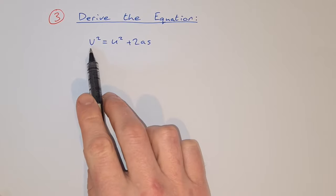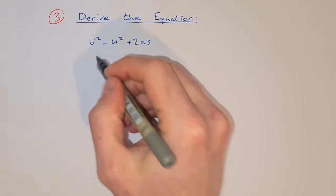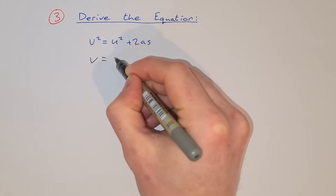So we're asked to derive the equation v squared is equal to u squared plus 2as. To derive this one, we start with equation 1, which is v is equal to u plus at.